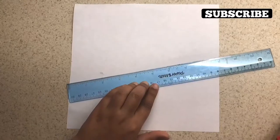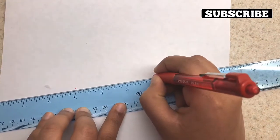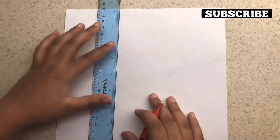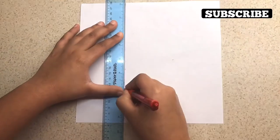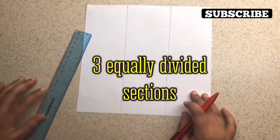Then if you want to make a trifold, you need to first make a dart at the 3 inch and the 6 inch. Then draw straight lines. And then there you have three equally divided sections.